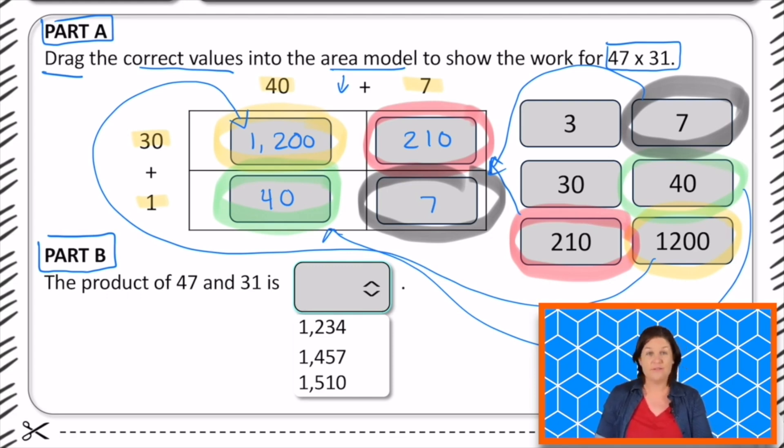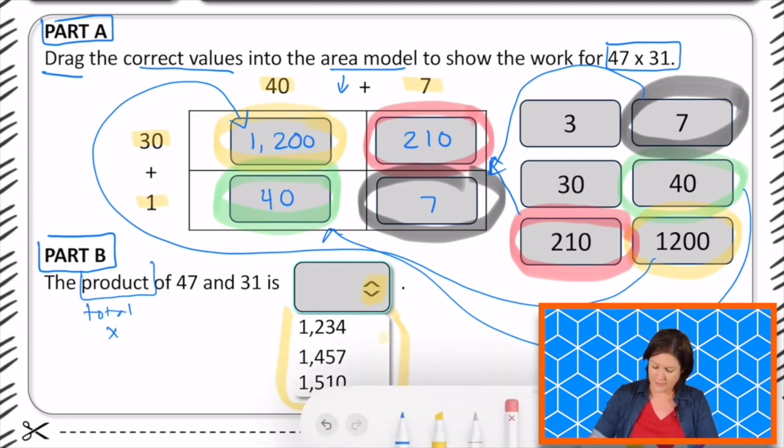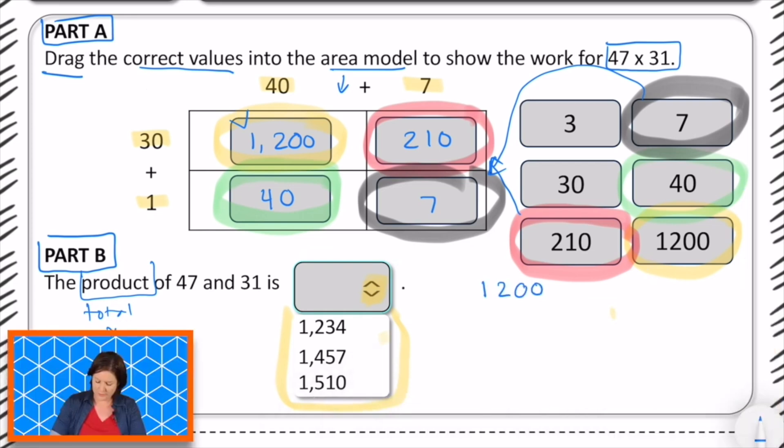Part B says, find the product of 47 and 31. Or it says, the product of 47 and 31 is, and we have a drop-down menu. So we would click these two little lines, and it would drop down this menu right here. And we have to select the correct product. Now the product is the total when you multiply. So we've done most of the work in the area model. I'm just going to go ahead and take that. So we've got 1,200 plus 210 plus 40 plus 7. If we add those together, we get 1,457. So we would go ahead and select this one, and it would show up right here. Okay?